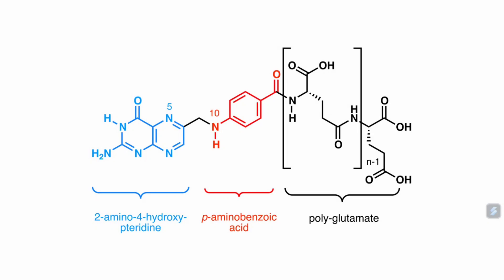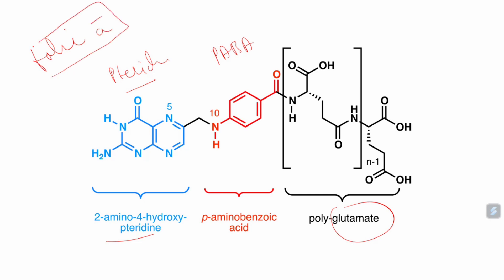This is the basic structure of folic acid. Folic acid is made up of mainly three components: the blue color component is 2-amino-4-hydroxy-pteridine — a pteridine molecule — which is combined with PABA (para-aminobenzoic acid), and these two compounds are interlinked with glutamates. Folic acid, available in different dietary sources, is in the form of polyglutamates.